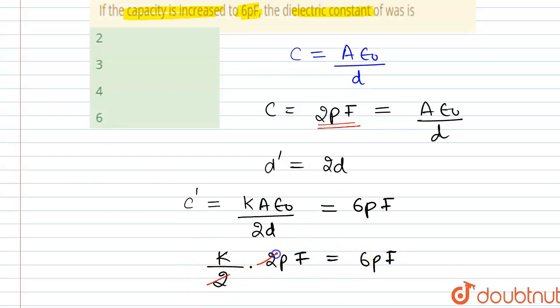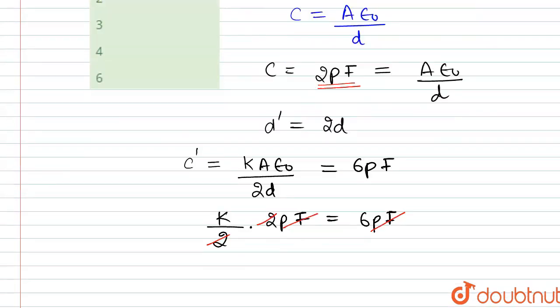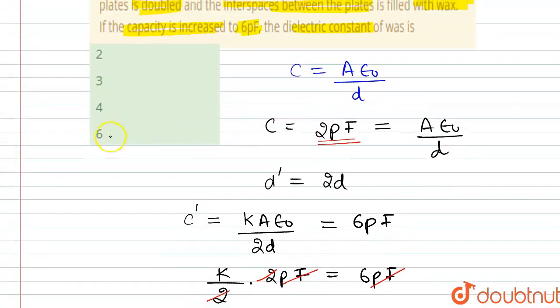The 2s cancel out, picofarads cancel out, and we get the dielectric constant of wax equals 6. So from the options, option D is the correct answer.